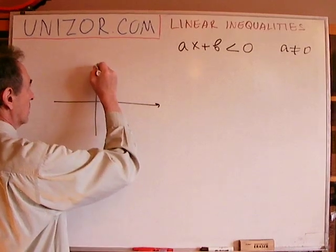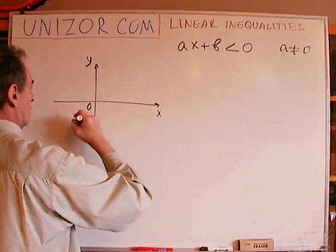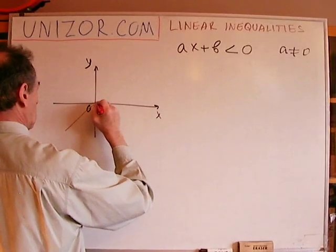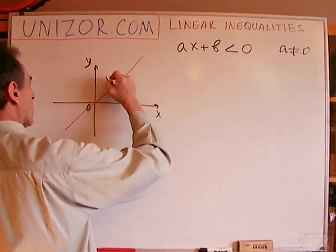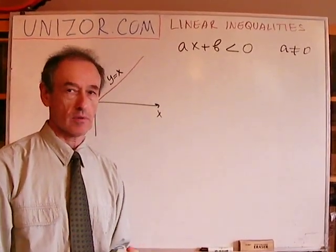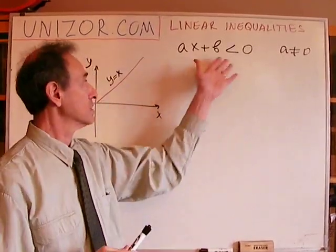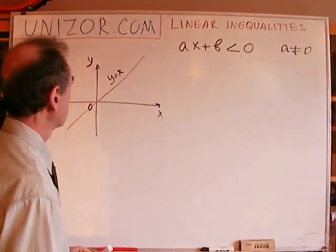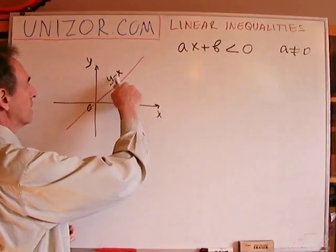We start with the function y equals x — that's step number one to construct the graph. Obviously I could construct it immediately, but I'd like to do it step by step so you understand it better. The next step is to construct the function y equals a times x, so I have to multiply this graph by a.